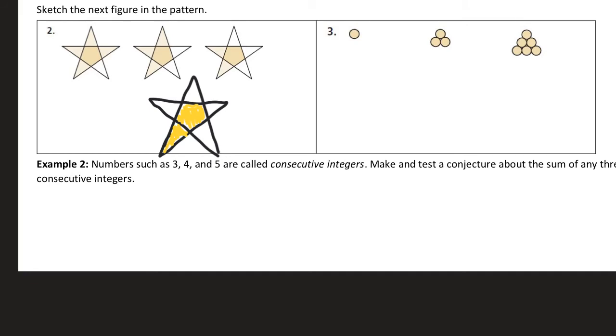And then this last one, it's a pile of circles. So you have one, three, and then six. So when you're thinking about that one, basically, I'm adding a bottom row to that pyramid of circles. So my bottom row is going to have one, two, three, four circles, and then three, and then two, and then one.